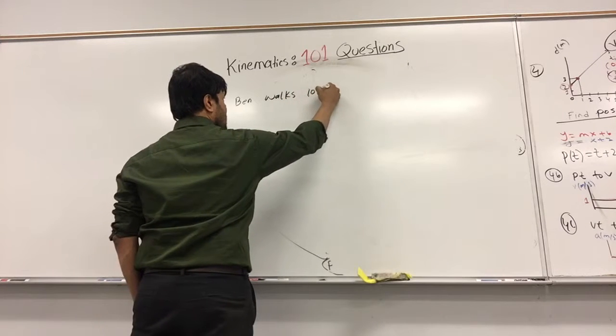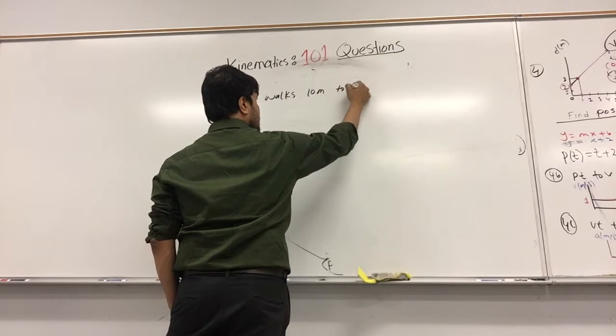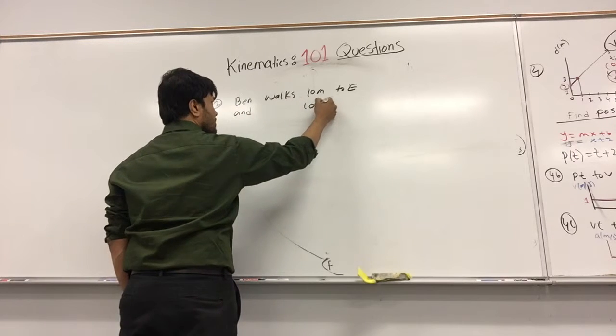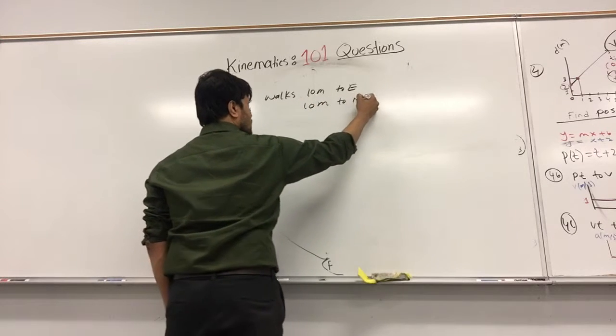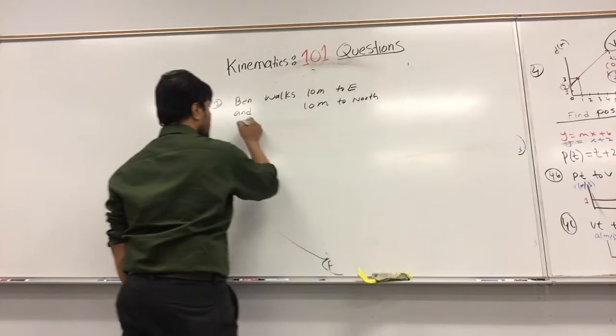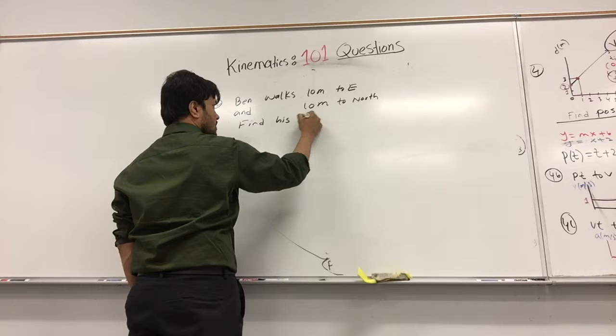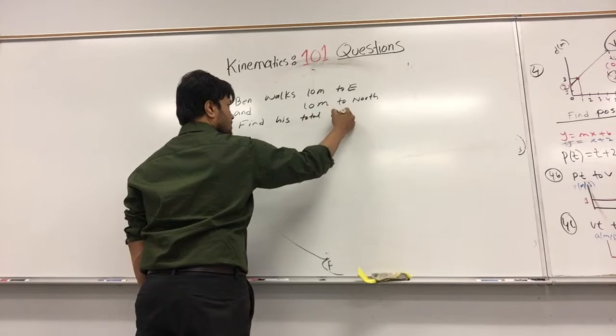A band moves 10 meters to the east and 10 meters to the north. We need to find the total displacement.